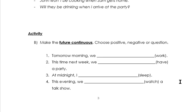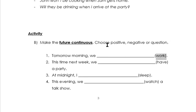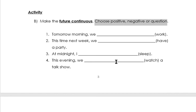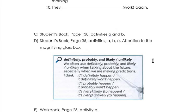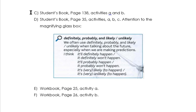Then you have some activities — you have to make the future continuous. Complete the sentences with the verb in brackets. You have to choose positive, negative, or questions. You have 10 exercises. Then you will have some activities on your books where you have to choose negative. This is the writing.